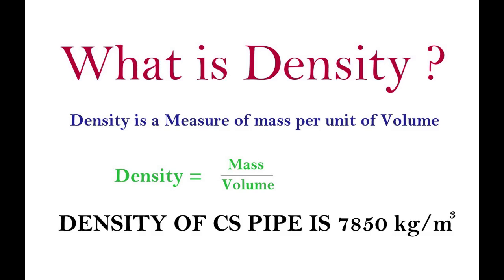Density is a measure of mass per unit of volume. Therefore, density equals mass by volume. Density of CS pipe is 7850 kg per meter cube. This density value is taken from the pipe schedule chart.